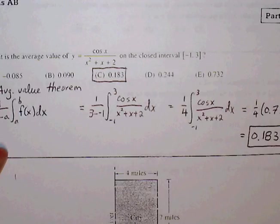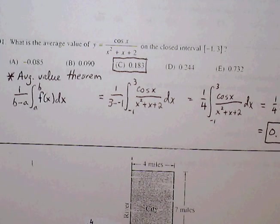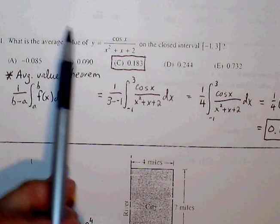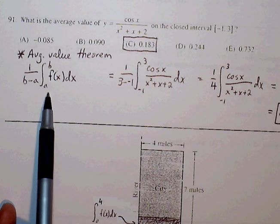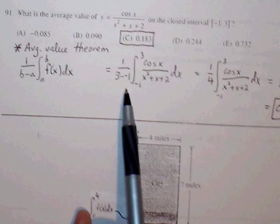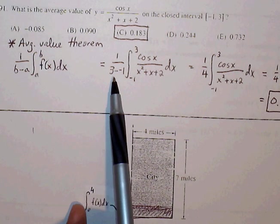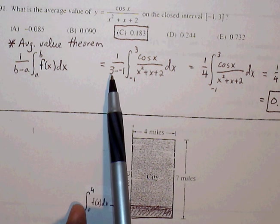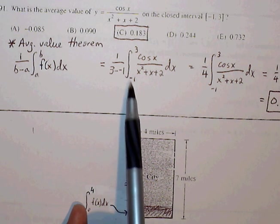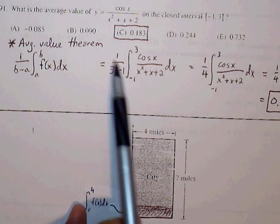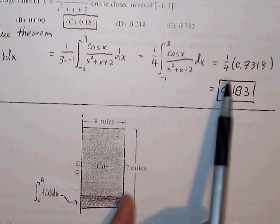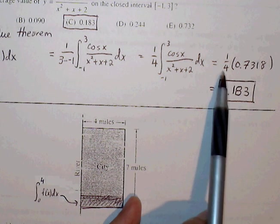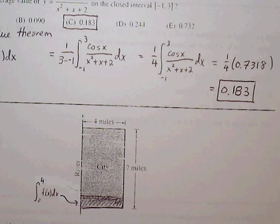Okay, last two problems here. 91, what is the average value of our function on the closed interval? So we can simply apply the average value theorem, 1 over b minus a, definite integral from a to b of f(x). So we can just plug this into our calculator. Our a and b values are negative 1 and 3, so 3 minus negative 1. Between negative 1 and 3, this gives us 1 fourth. And we can plug this in our calculator, which will give us 0.7318. Divide by 4, and we get 0.183.